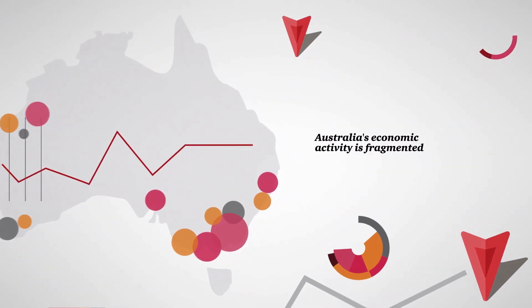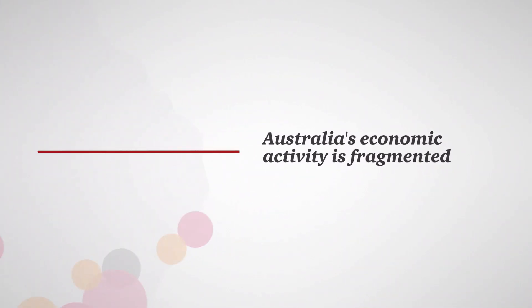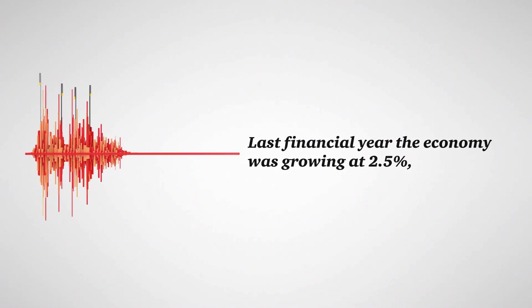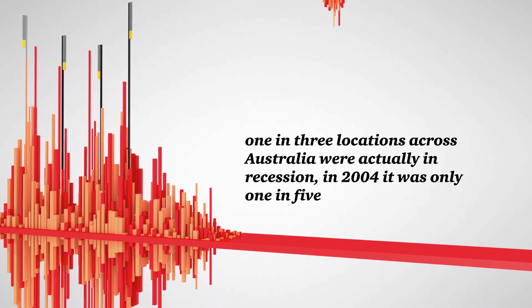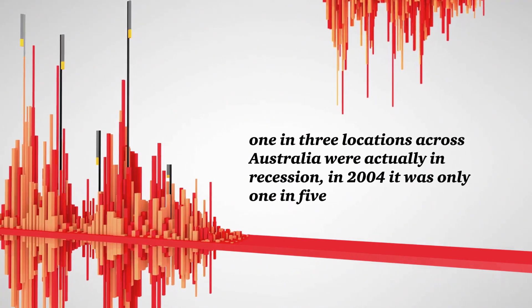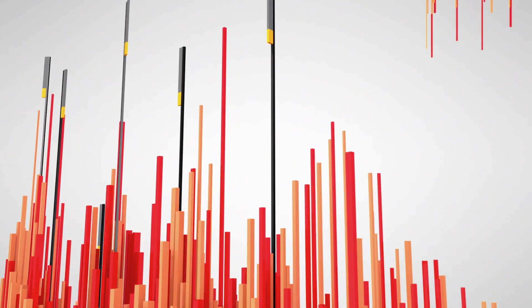And economic activity is fragmented. Last financial year, the Australian economy was growing at 2.5%. But in fact, over one in three locations across Australia were actually in recession. In 2004, it was only one in five.